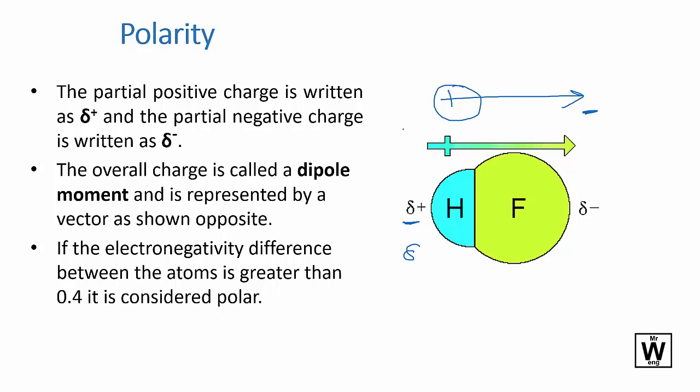So that's how we indicate a permanent pole, a permanent dipole. And how do we know if it's polar or not? Well, if the electronegativity difference is greater than 0.4, we consider it polar.